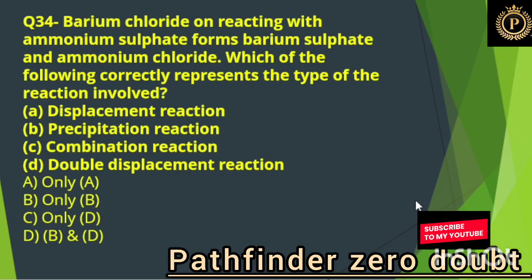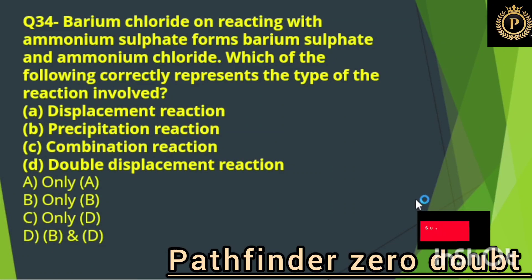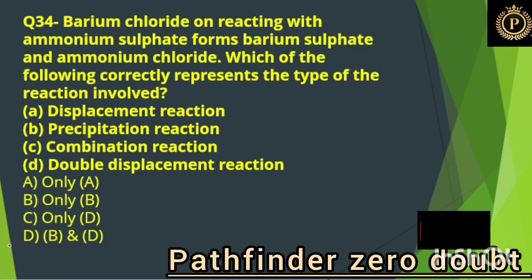Barium chloride reacting with ammonium sulfate forms barium sulfate and ammonium chloride. Which of the following correctly represents the type of reaction involved? Option D, B and D — that is, precipitation reaction and double displacement reaction.